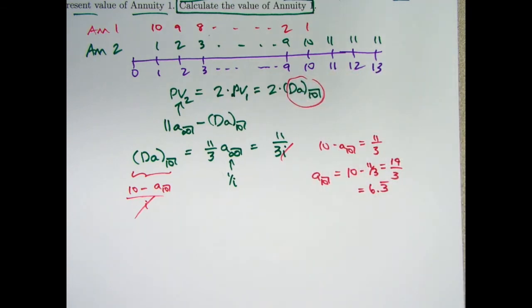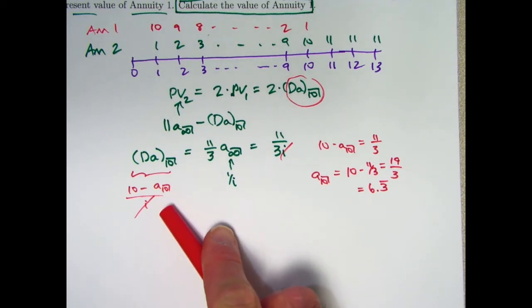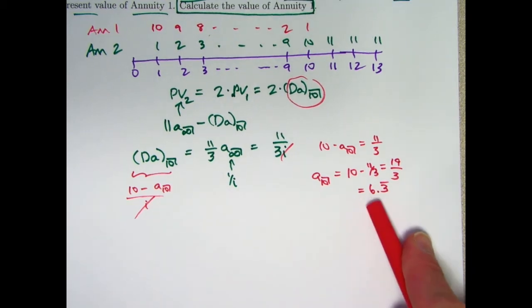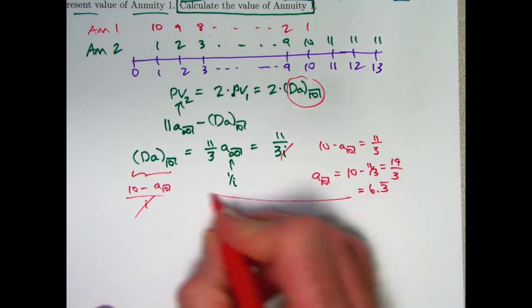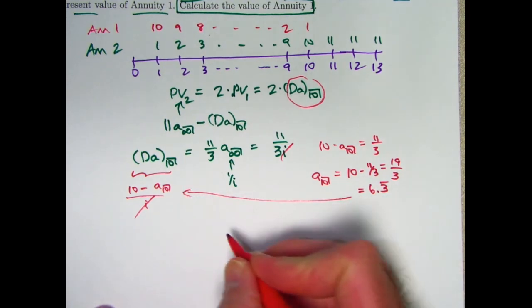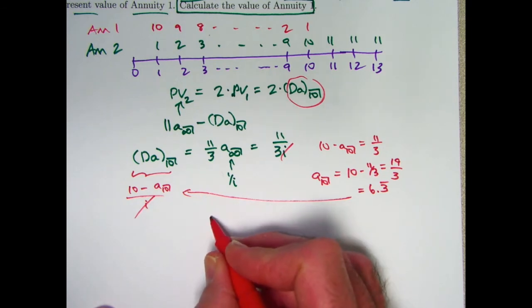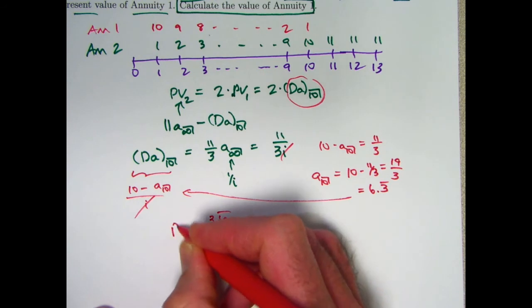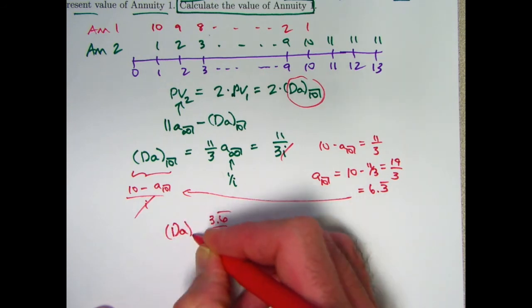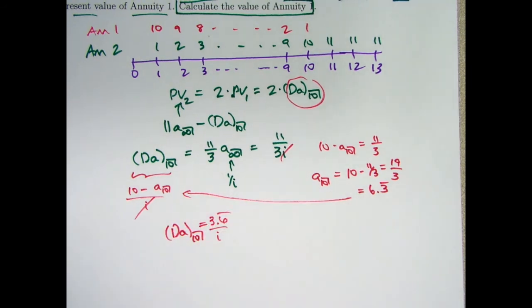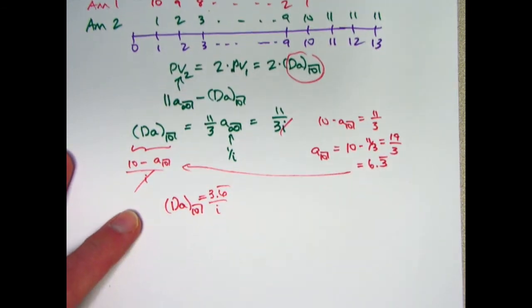We need to maybe solve for i first to then help us go back to this formula and use this. We already have A 10. I can even go ahead and plug it in there. Our answer is going to be 10 minus 6.3 repeating is going to be 3.6 repeating over i. That's going to be DA 10, and that's going to be our answer, but we need to figure out i. So here's where the calculator is going to come into play.